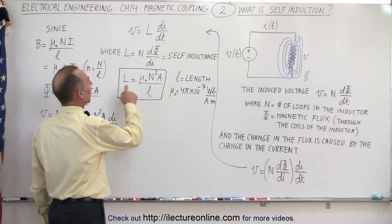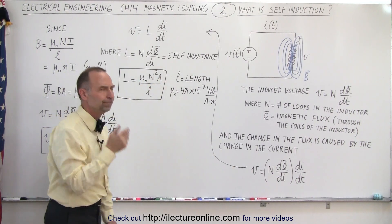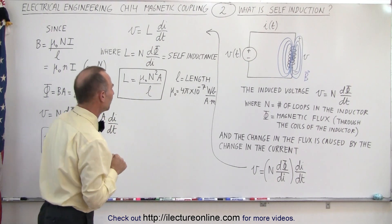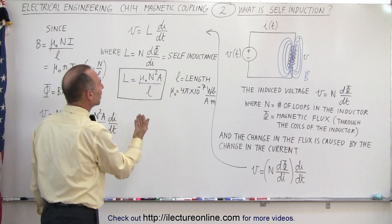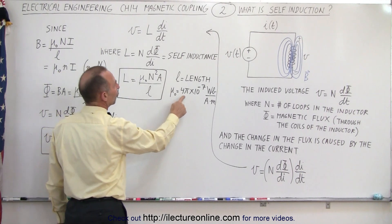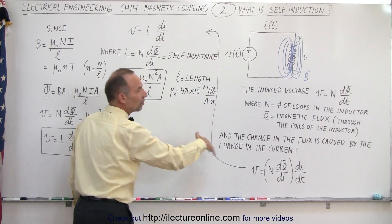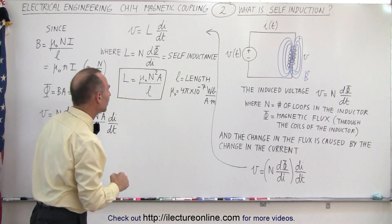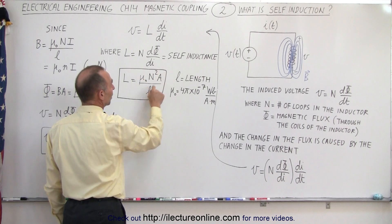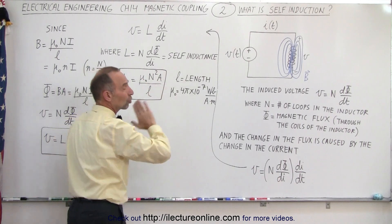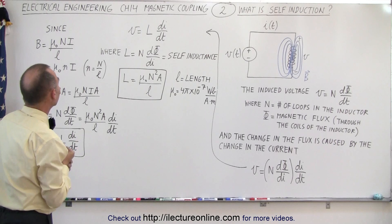We can also write L as μ₀N²A divided by L. Where did that come from? Well, μ₀ is the permeability of free space, defined as 4π × 10⁻⁷ Weber per amp·meter. We'll get into more detail on that later. L is the length of the coil, N is the number of loops (squared), and A is the cross-sectional area of the loop.